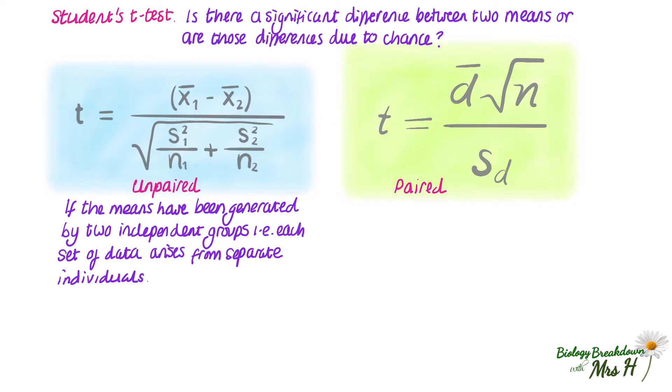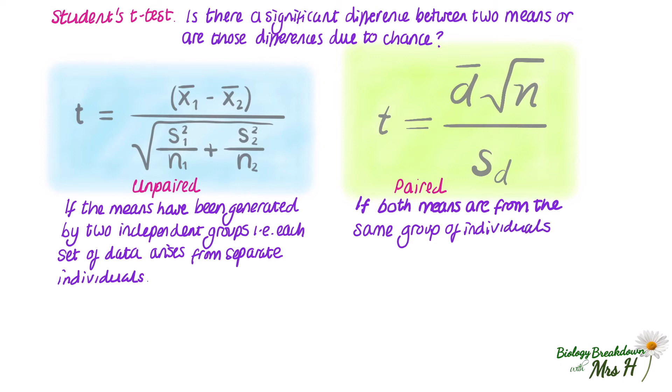You would use a paired student's t-test when both means are from the same group of individuals at different points in time. So if we take a similar example — the same 15-year-olds in the UK — and compared their daily exercise before and during lockdown, because this comparison involves the same individuals, we use a paired student's t-test.